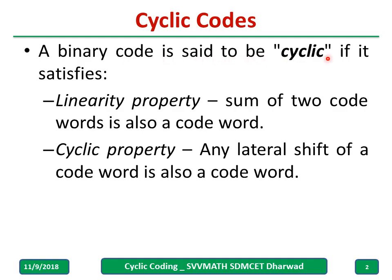A binary code is said to be cyclic if it satisfies two requirements: one is a linearity property and there is a cyclic property.